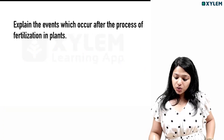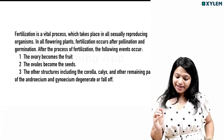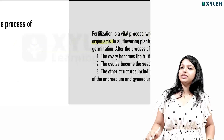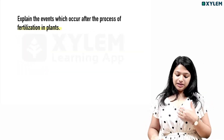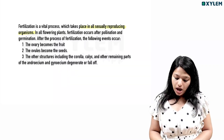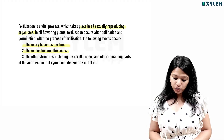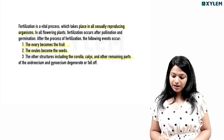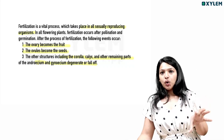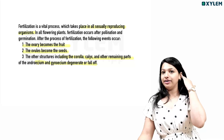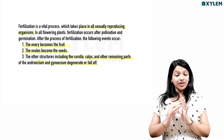Explain the events which occur after the process of fertilization in the plant. Fertilization is a vital process that takes place in all sexually reproducing organisms. After fertilization, structures including corolla, calyx, and remaining parts of androecium and gynoecium degenerate. These are the post-fertilization events.